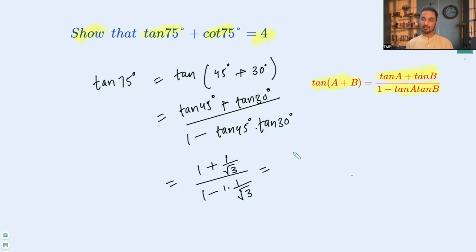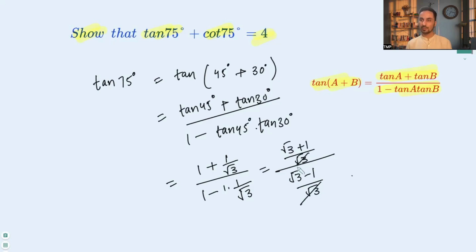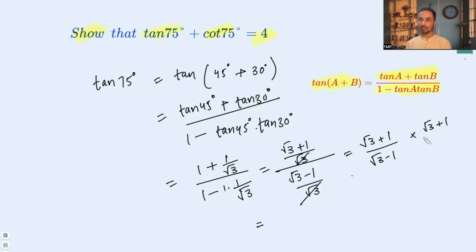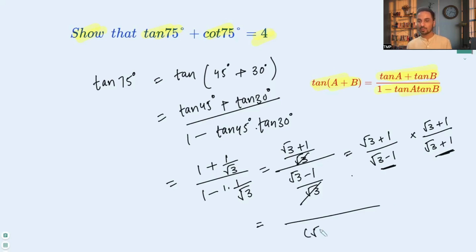Simplifying by taking LCM in the numerator gives (√3 + 1)/√3, and similarly taking LCM in the denominator gives (√3 − 1)/√3. The √3 cancels, leaving (√3 + 1)/(√3 − 1). To rationalize the denominator, we multiply numerator and denominator by (√3 + 1). The denominator is now in the form (a − b)(a + b) = a² − b², giving √3² − 1² = 3 − 1 = 2.